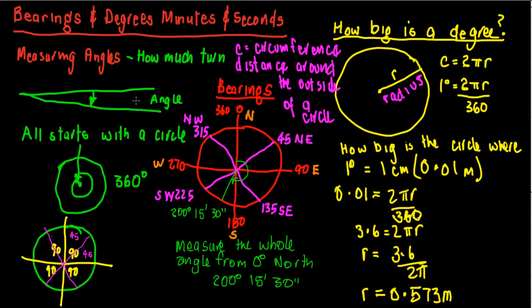So how do we get a handle on how big these degrees, minutes, and seconds are? How big is a degree? We all know that the circumference of a circle is the distance around the outside, and we have a formula for that which is 2πr. If we divide that 2πr by 360, that'll give us one degree or how big one degree is. But that's not a lot of help to us, so what I thought I'd do is say, well, how big is the circle where one degree is one centimeter?